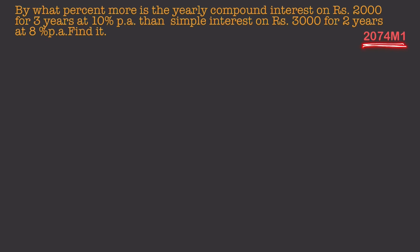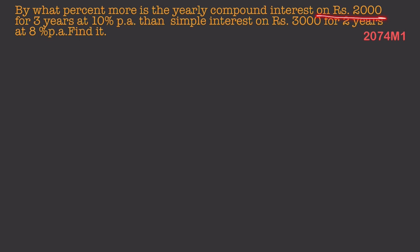From question: compound interest and simple interest are given. We need to find by what percent the yearly compound interest is more than simple interest. The question gives principal 2000, for 3 years, at 10% per annum. We have the principal, time, and rate.